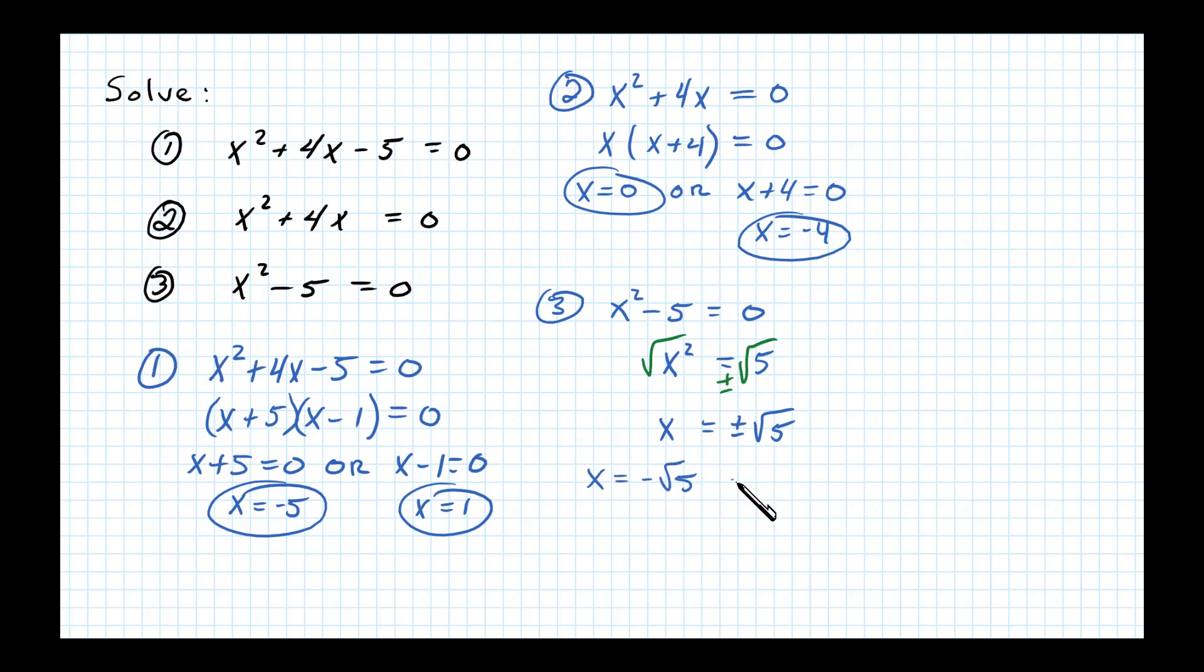To recap: for the first equation, we had a quadratic trinomial so we factored it and set each factor equal to 0. For the second equation, we factored this binomial by factoring out the GCF and then setting each factor equal to 0. For the third equation, we didn't have a GCF so we solved by extracting square roots, taking the square root of both sides to obtain the two answers. These are the three situations you're going to run into. You can solve all three with the quadratic formula as well, but for now, solve by factoring.